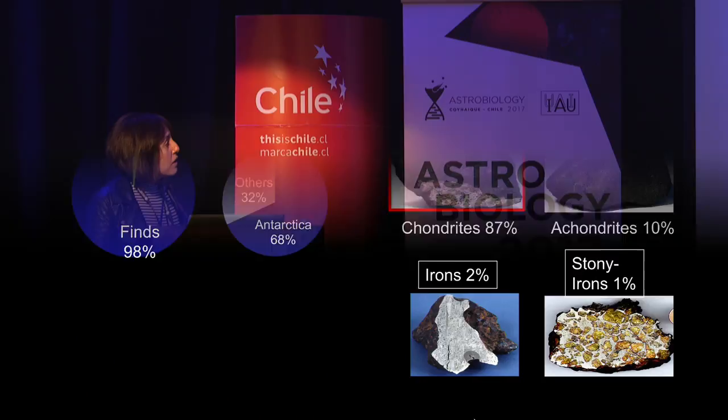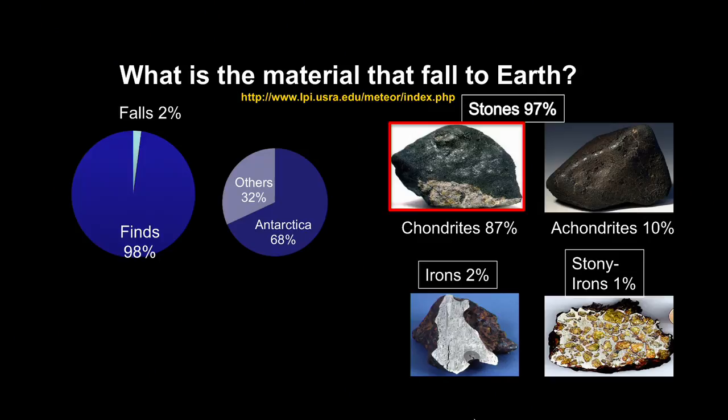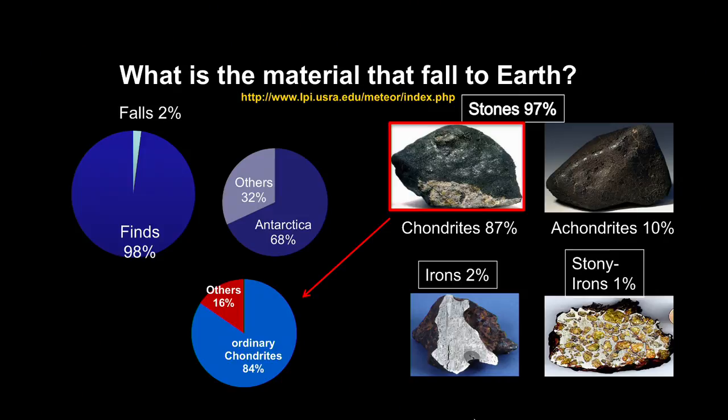Most stony meteorites are chondrites, and fewer are irons and stony irons. My study is based on ordinary chondrites, which are 84% of chondrites, and the others are other types of chondrites.